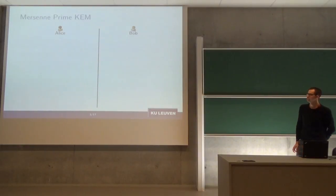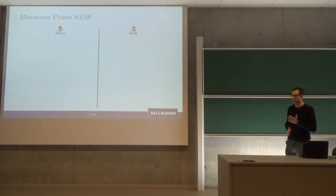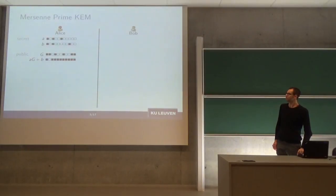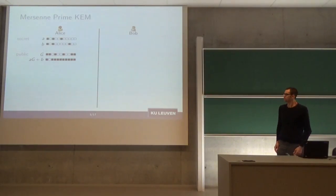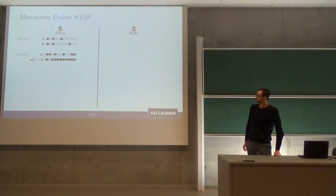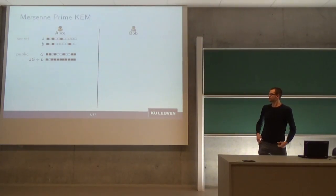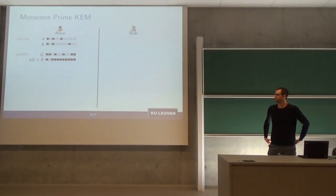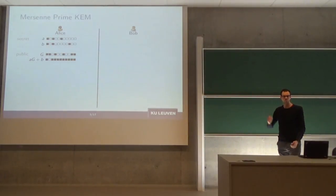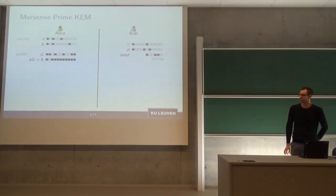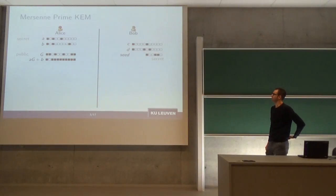We can build a key encapsulation mechanism from this. Alice takes two secret sparse integers a and b, and a non-sparse integer, and computes a times g plus b. The value g and this public component will be published.